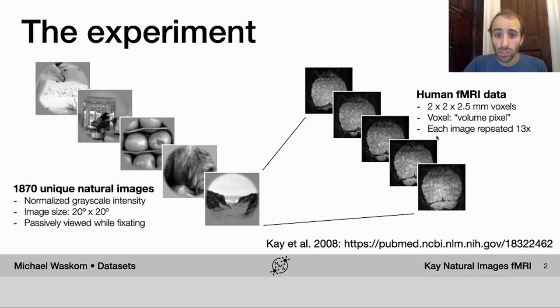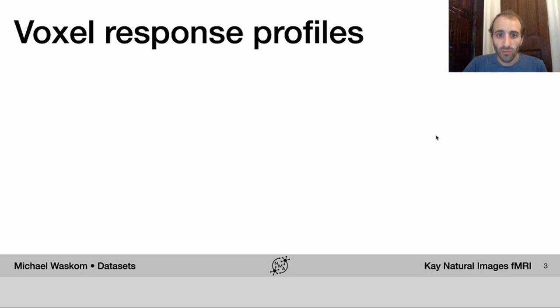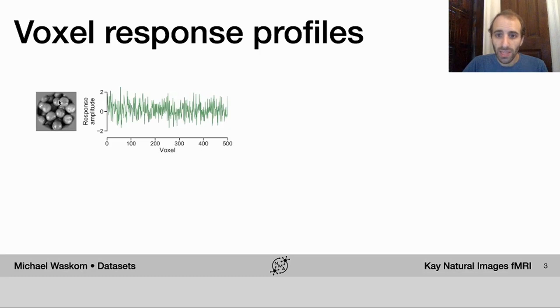Now another thing to know about fMRI data is that it's relatively noisy. In the original experiment, each image was repeated 13 times. And the data set that you'll be working with is going to reflect the average response across those 13 presentations of each image in every voxel. So you can think of the data you'll be working with as reflecting the profile of responses in each voxel across the set of images that were shown to the subject.